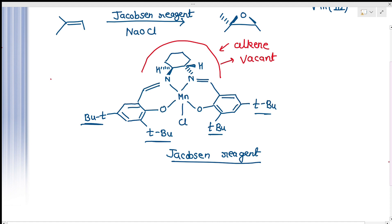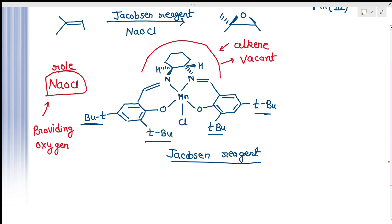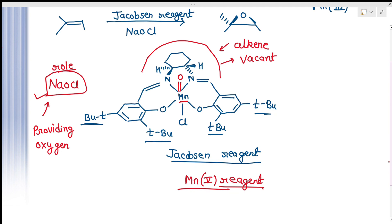Now, we are using NaOCl in this reaction. What is the role of this NaOCl? Actually, this NaOCl is providing oxygen. You can see in this manganese complex there is no oxygen left, but we have to do the epoxidation, so we need oxygen. The oxygen comes from NaOCl, which reacts with the manganese complex in the first step. So this Mn(III) complex converts to Mn(V) complex, and this Mn(V) reagent is then attacked by the alkene to give the epoxidated product.